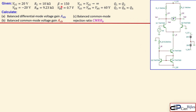For all transistors, beta is 150 and the base-to-emitter voltage is assumed to be 0.7 volts. We have Rm to create the reference current Im, and the tail current is Ix. Rc is for the differential pair to create gain. The power supplies Vcc and Ve are 20 and minus 20 volts. We need to calculate the balanced differential mode voltage gain, the balanced common mode voltage gain, and the common mode rejection ratio.